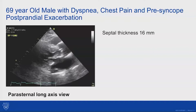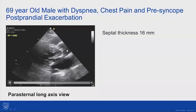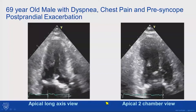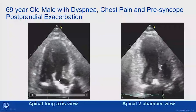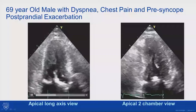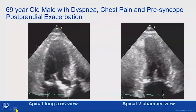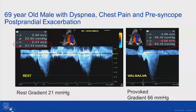His echocardiogram parasternal long axis view shows thick walls. He has calcium in his mitral and aortic annulus, a narrowed outflow tract, and an aberrant muscle bundle underneath the septum. His wall measured 16 millimeters. In the apical long axis view, he has significant systolic anterior motion, significant mitral annular calcification, and minimal mitral or aortic stenosis. In the two-chamber view, he has thick walls all the way around his heart, though the septum is more thick — asymmetric septal hypertrophy. At rest he has a gradient of 21, and with Valsalva it went up to 66 mmHg.